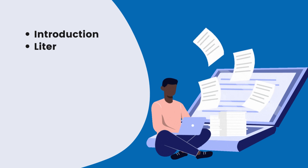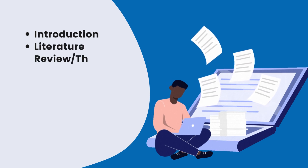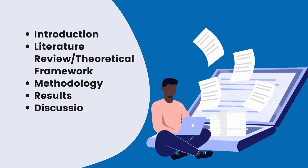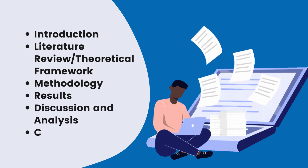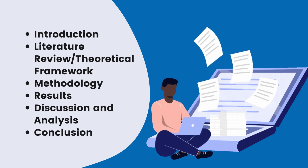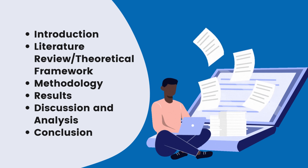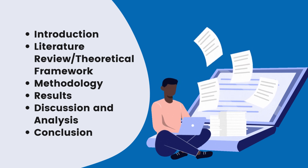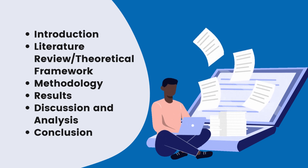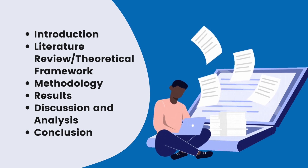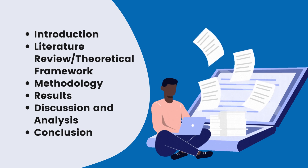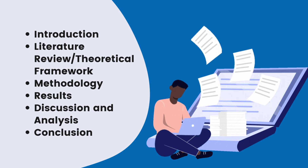Chapter Outline and Structure: A well-structured chapter is essential for clarity and coherence. Begin with a detailed outline that breaks down each chapter into sections and subsections. A typical chapter might include an introduction that sets the stage by presenting its purpose, relevance, and an overview of its content. The literature review or theoretical framework should survey relevant literature, theories, and models, then analyze and synthesize existing research, identifying gaps that your study aims to address.